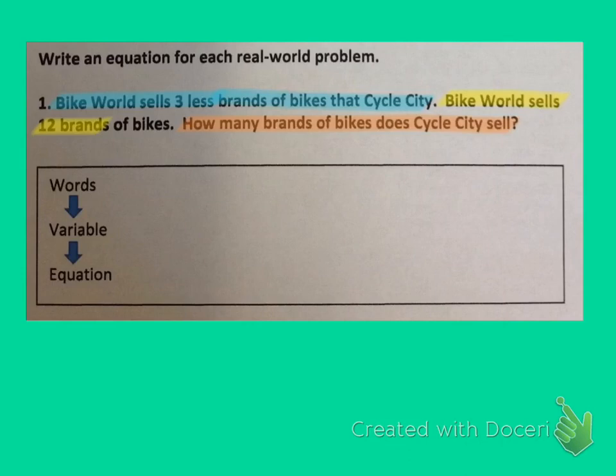So let's look at what the problem is telling us. It says Bike World sells three less brands than Cycle City. So that means Cycle City sells three more brands than Bike World. So it's going to be Cycle City minus three, right, because that's going to tell us how many Bike World is. And then it says Bike World sells 12 brands, so we do know that. And then how many brands of bikes does Cycle City sell? That's our unknown. And so that's what we're going to need to use to represent a variable.